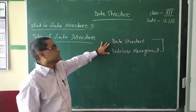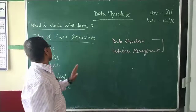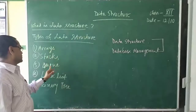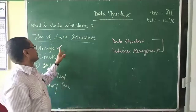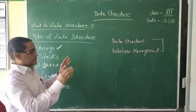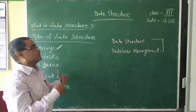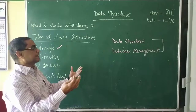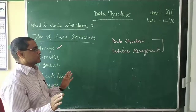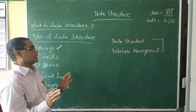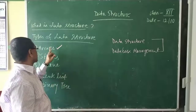Both data structure and database management handle a lot of data, but data structure works with the whole operation in memory only. I will use the array as an example — when you write an array program and run it, the computer reads the data, does the operation, and gives you the result. There is no place of storing the data somewhere else.